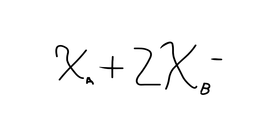XA plus 2XB equals C. C designates a constant because the length of the rope always stays the same.